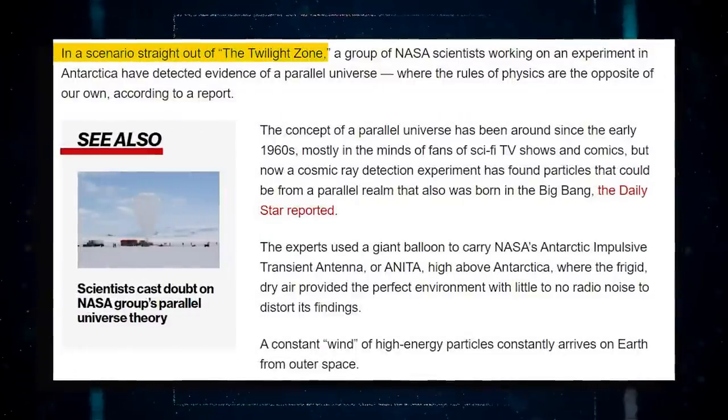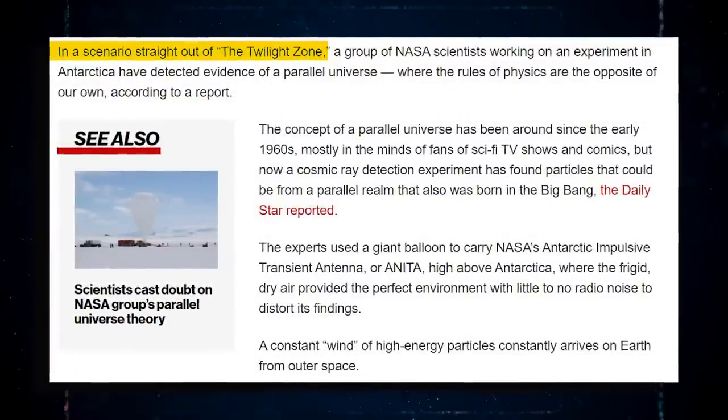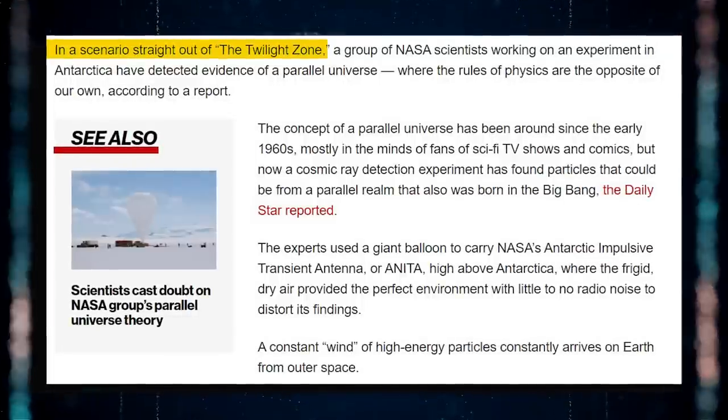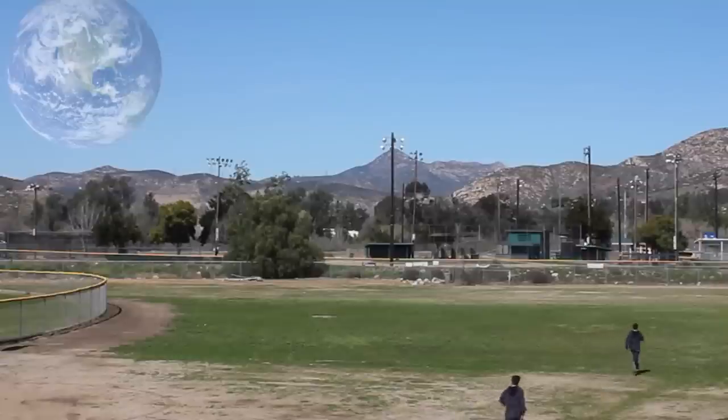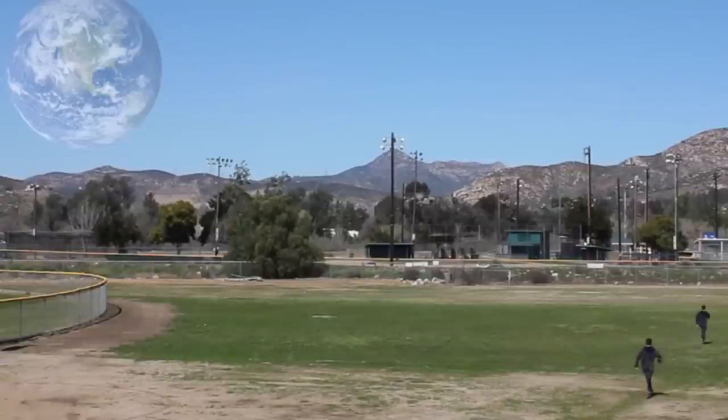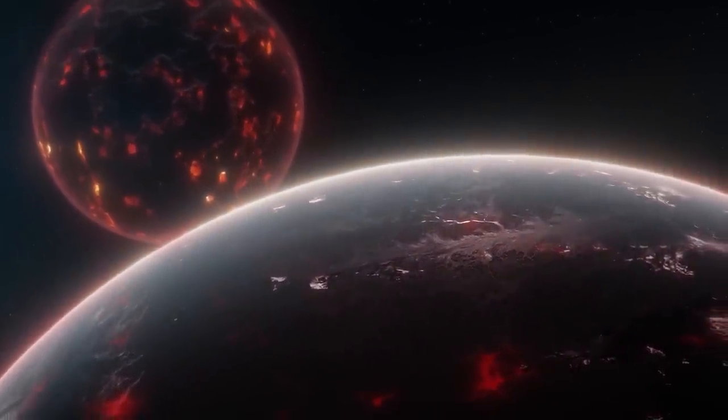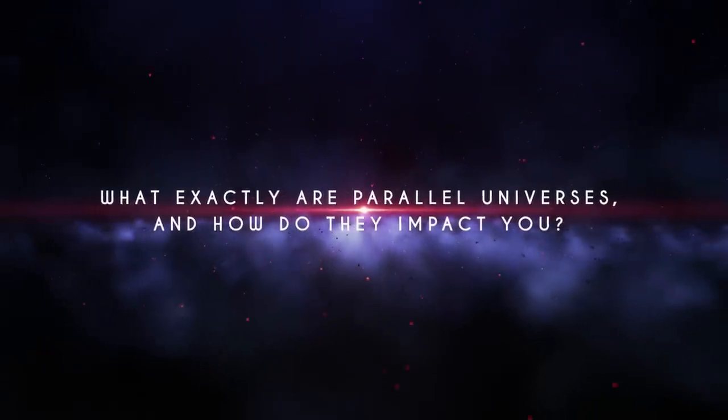In a scene right out of the Twilight Zone, a group of NASA scientists working on an experiment in Antarctica discovered evidence of a parallel universe whose physics rules are totally opposite to our own. While some scientists dismiss this as science fiction, new evidence for the existence of these parallel universes is emerging.